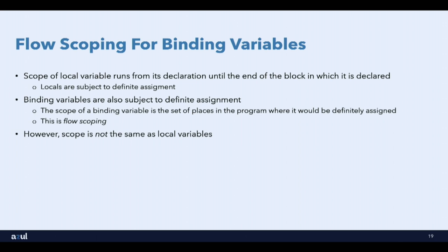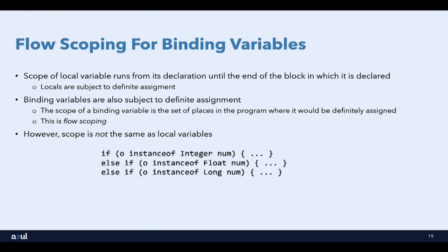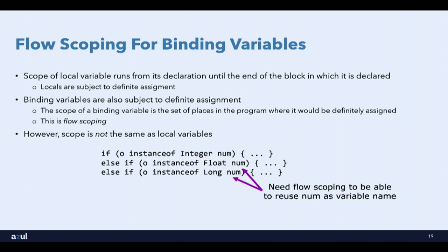Flow scoping is useful because you can reuse a pattern variable name in separate branches: 'if (o instanceof Integer num) ... else if (o instanceof Float num) ... else if (o instanceof Long num)'. You couldn't do that with local variables because the compiler would complain about duplicate declarations. With pattern variables, flow scoping means each variable is only in scope in its own conditional branch.